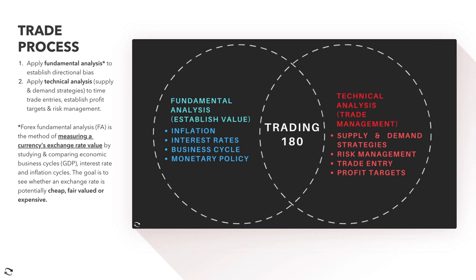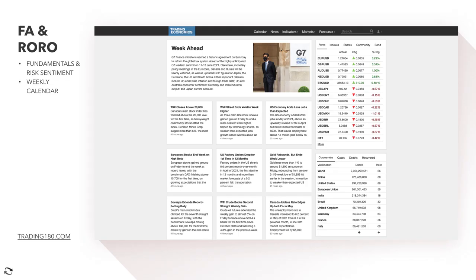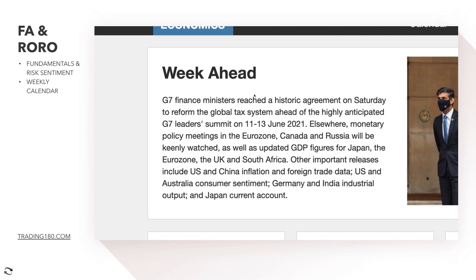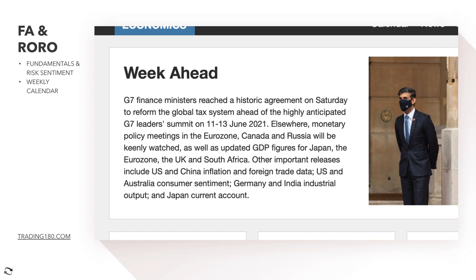Let's get into the analysis, starting with the week ahead and the upcoming fundamental macroeconomic drivers. G7 Finance Ministers reached a historic agreement on Saturday to reform the global tax system, ahead of the highly anticipated G7 Leaders Summit on June 11th to 13th 2021. Monetary policy meetings in the Eurozone, Canada, and Russia will be keenly watched, along with updated GDP figures for Japan, the Eurozone, the UK, and South Africa.